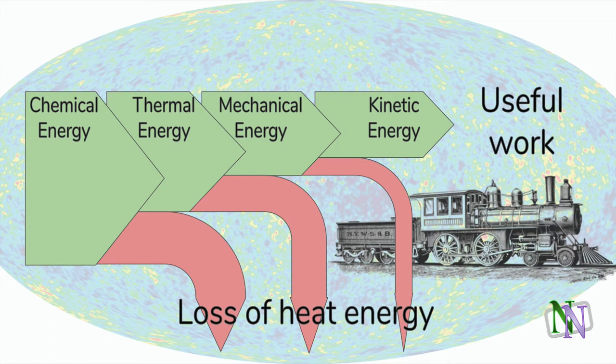Along the green path, chemical energy in fuel such as coal is converted to thermal energy, which heats the water in the boiler to steam. A proportion of this heat energy is lost to the atmosphere. The steam moves the parts of the machine, which is mechanical energy, and the train moves, which is kinetic. At each stage, the conversion to useful energy is never 100% efficient — there is always a lot of heat lost to the surroundings, shown by the red arrows, which is not converted to useful work.